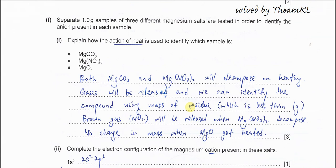Part F: Separate 1.0 gram samples of three different magnesium salts are tested in order to identify the anion present. We have a few anions now: carbonate, nitrate, and oxide. Explain how the action of heat is used to identify all these samples with different anions. It's very easy. First you need to understand magnesium oxide is highly stable. When we try to heat magnesium oxide, there is no change. It still remains as oxide.